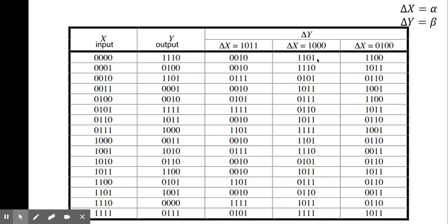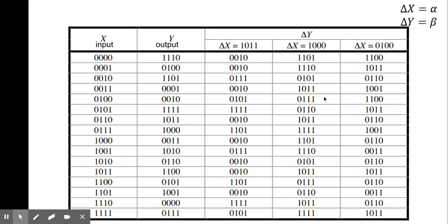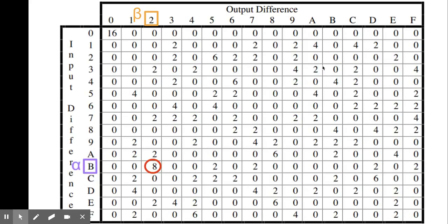If we see the column for delta X is equal to 11, we see that the output difference of 2 has appeared 8 times and the output difference of 7 has appeared 2 times. Similarly, if we see the column of delta X is equal to 8, we see that the output difference of 15 has appeared 2 times and the output difference of 11 has appeared 4 times. We enumerate the input difference and their corresponding output difference in a table like this.